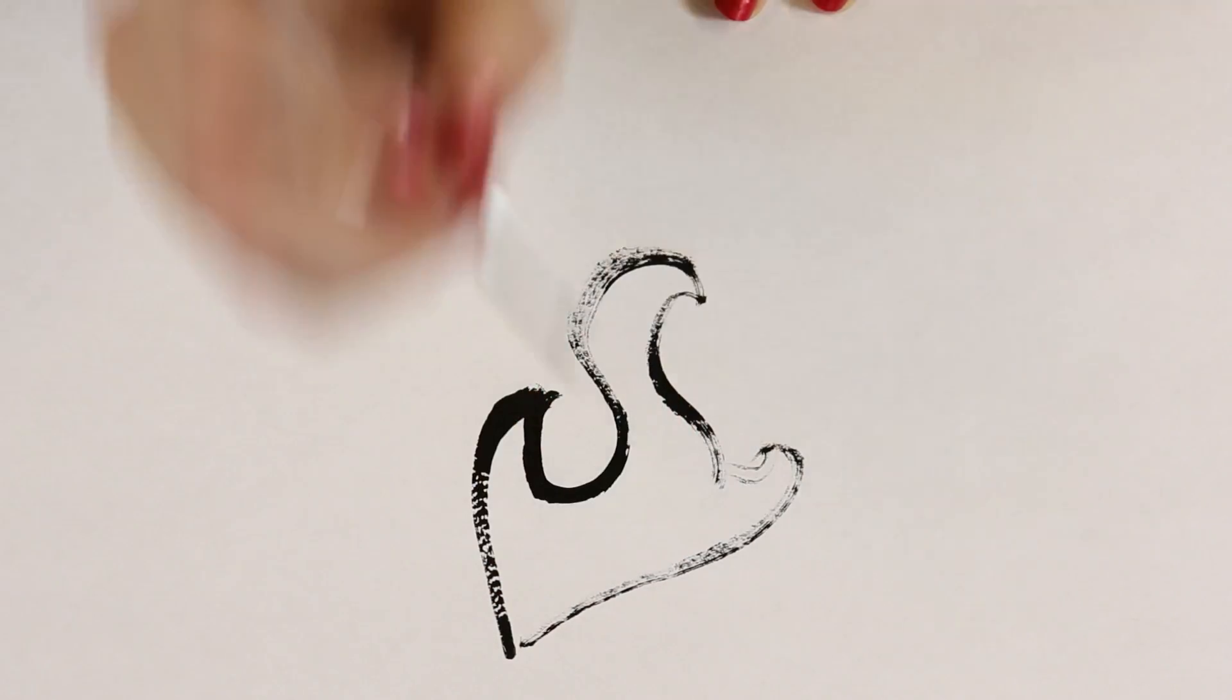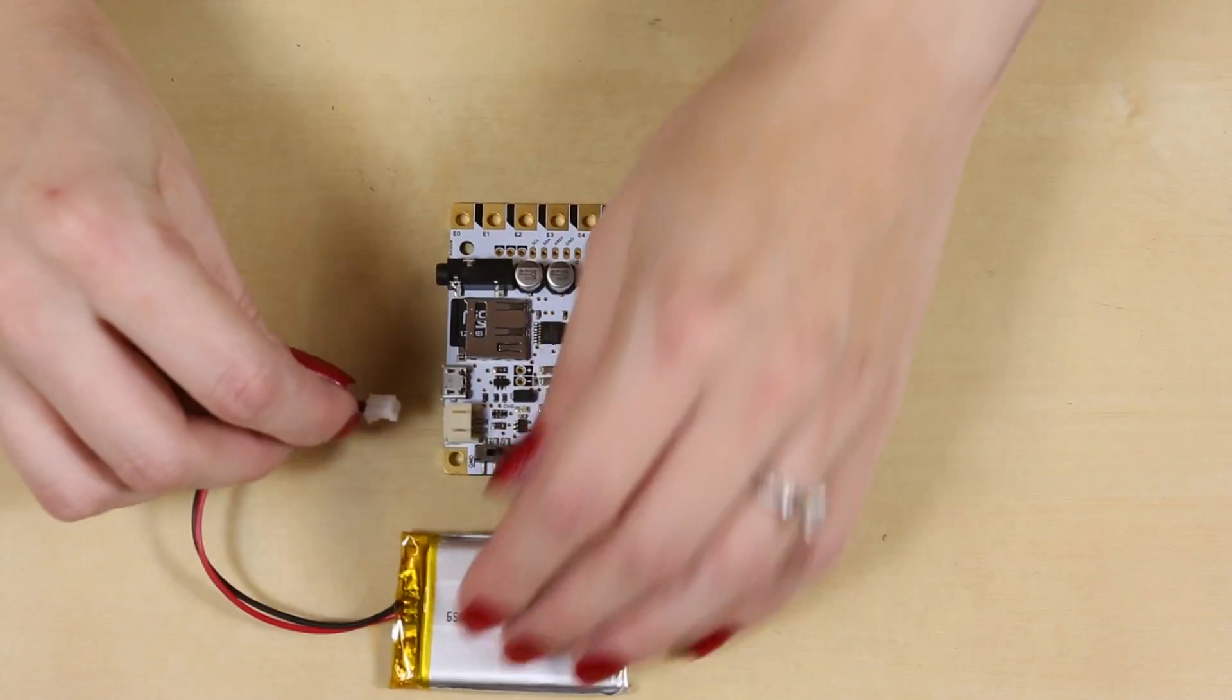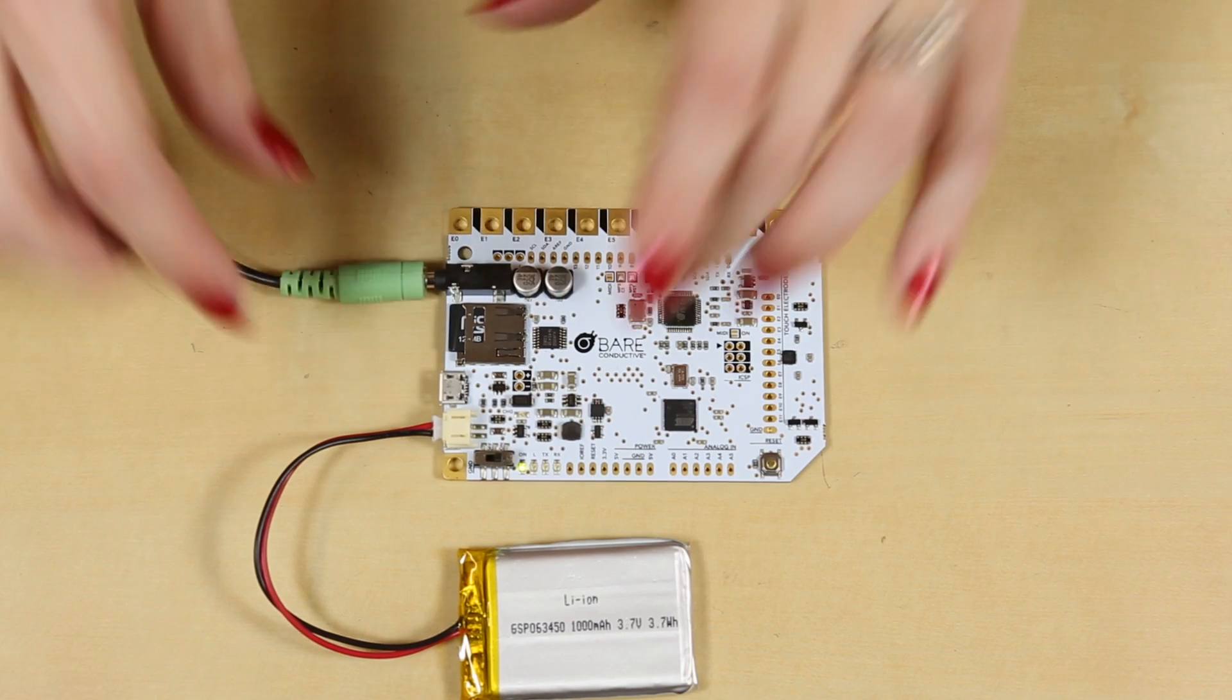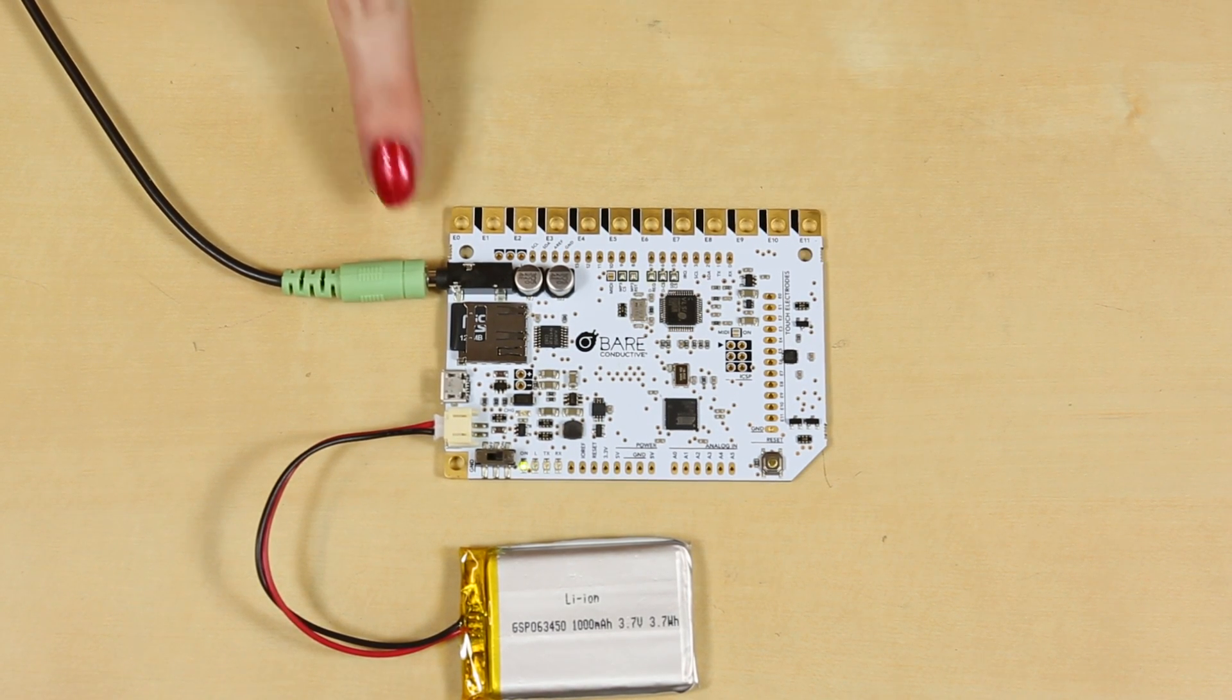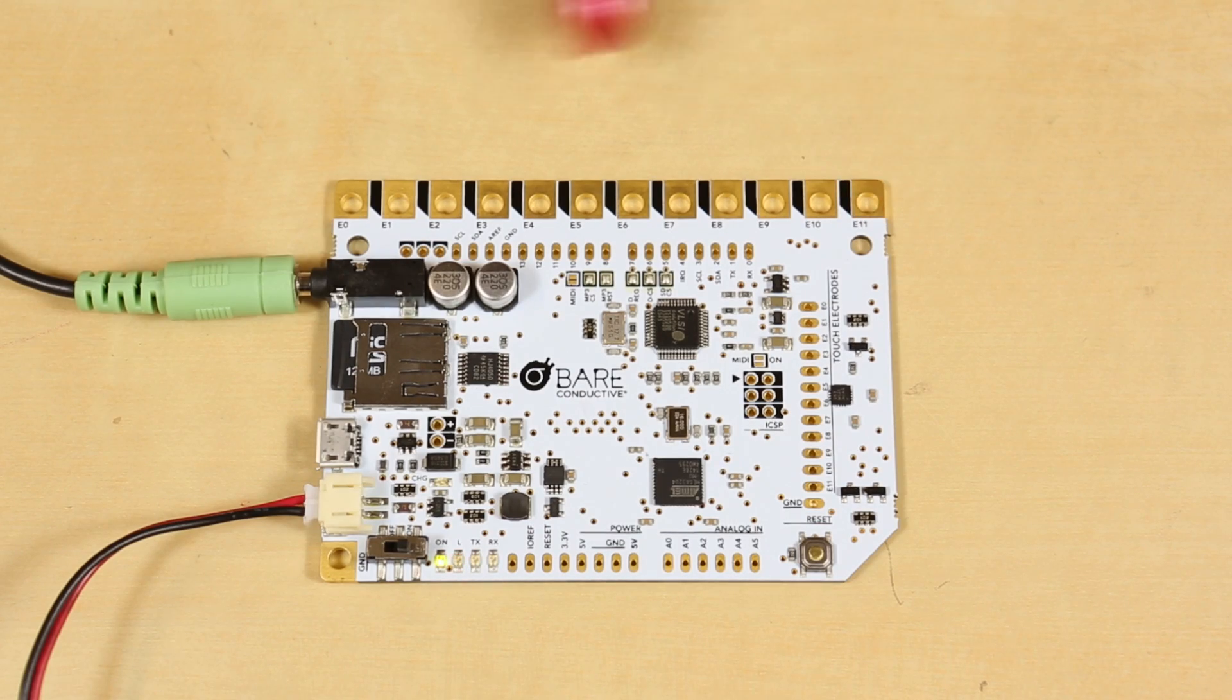Paired with the paint, we used a new product called the Bare Conductive Touch Board. The Touch Board is a plug-and-play capacitive touch sensing MP3 trigger. That means that when you touch something attached to the Touch Board, it will play a sound file of your choosing. Each of the 12 pins on the board can be linked to a different sound and connected to a different touchpoint.